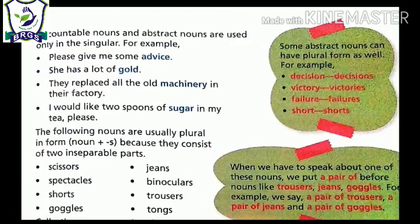The following nouns are usually used in plural form: scissors, spectacles, shorts, goggles, jeans, trousers, tongs. But when we have to speak about one of these things, we put 'a pair' before. If we have to speak about one thing, we say a pair of scissors. Can you pass me a pair of scissors please? Can I have a pair of trousers please? Then we use 'a pair of' in front of these nouns.